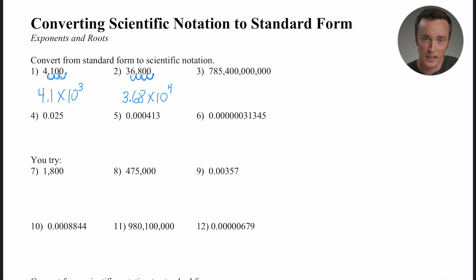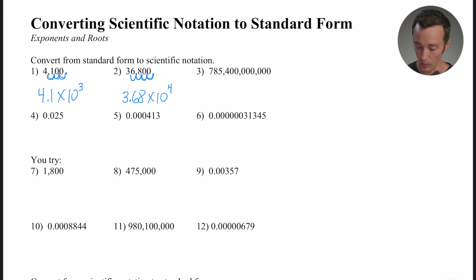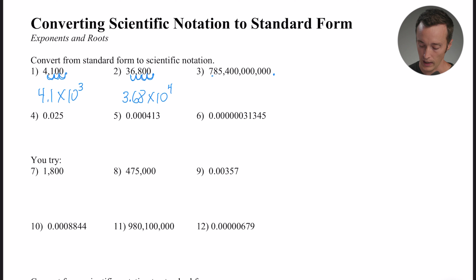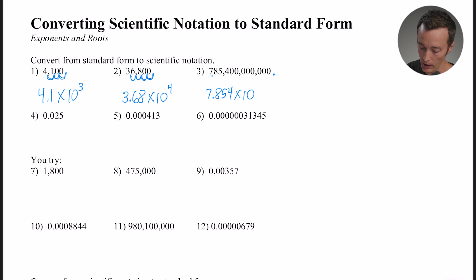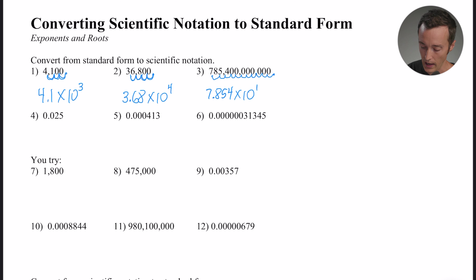Sometimes people wonder why you'd bother with scientific notation for something like 36,800, but it really pays off with very large numbers. Number three is a good example — the decimal point will land between the seven and the eight, making it 7.854. Counting the places from its standard form position: one, two, three, four, five, six, seven, eight, nine, ten, eleven places. Since that number is huge, the exponent is positive eleven.